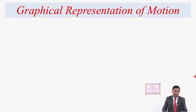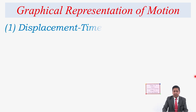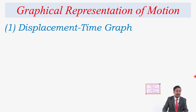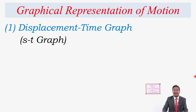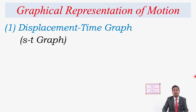Graphical representation of motion: the displacement-time graph. The motion of a body can be represented by an S-T graph, where S means displacement and T means time. S-T graph is the short form of displacement-time graph.